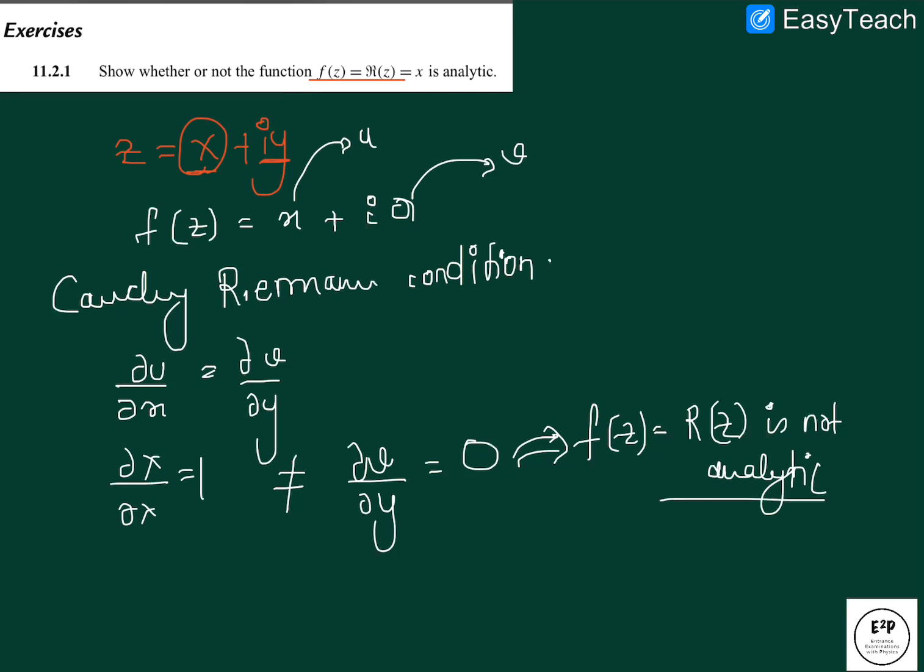I guess that's it for this question. The Cauchy-Riemann conditions, just to note here, are ∂u/∂x equals ∂v/∂y, and the second equation is ∂u/∂y equals minus ∂v/∂x. These are the two Cauchy-Riemann conditions that are satisfied when partial derivatives exist, and in that case the function is said to be analytic.